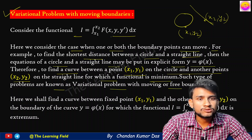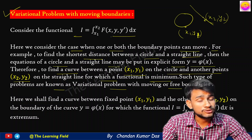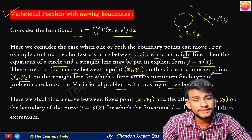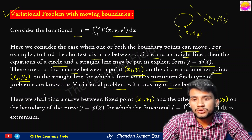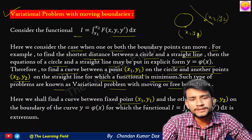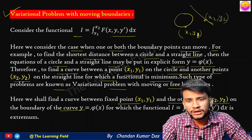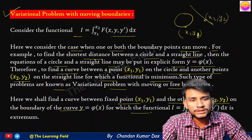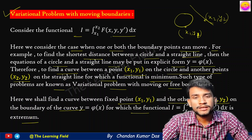Here the two points x1, y1 and x2, y2 can freely move — one on the boundary of the circle and the other freely on the straight line. Such problems are known as variational problems with moving or free boundaries. We find a curve between a fixed point x1, y1 and another point x2, y2 on the boundary curve y = φ(x) for which the functional I is an extremum.